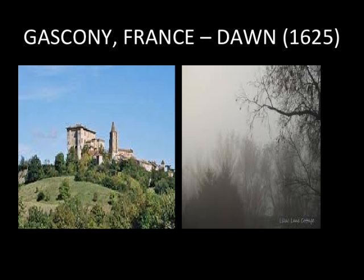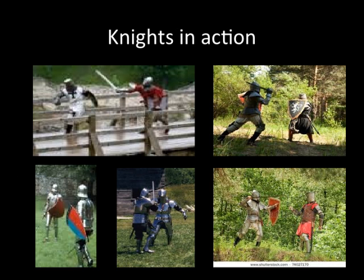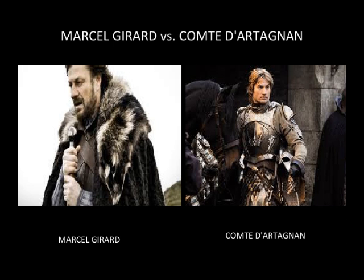These two knights — the first being Marcel Girard and the second being Comet d'Argonne — are both very different people. The first knight is in his mid to late 30s, a more rugged and earthy type, whereas the second one is the violent hero.